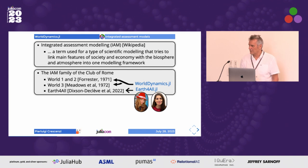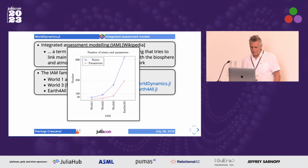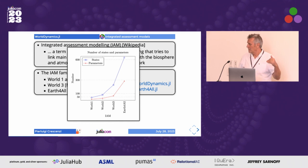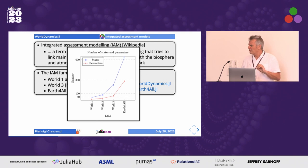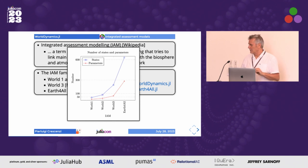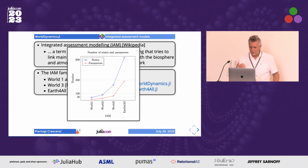Just to give you an idea of the increase in complexity of these models: this is the plot showing the number of variables and parameters in each of the four models. We start from a very simple model, the one by Forrester, with 41 variables and 15 parameters, and then the last one, Earth for All, has more than 600 state variables and around 300 parameters.